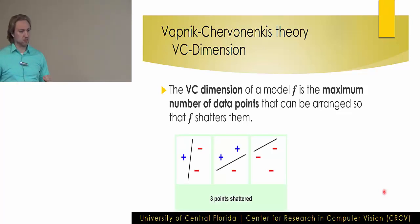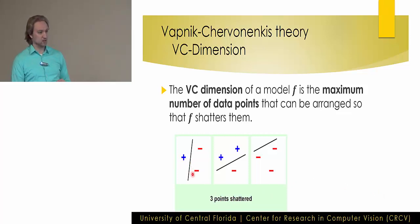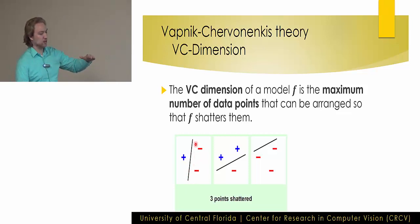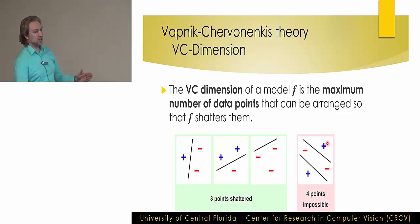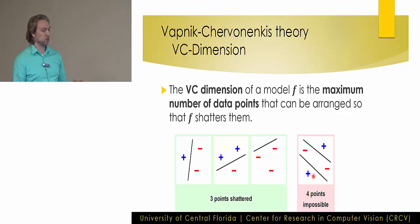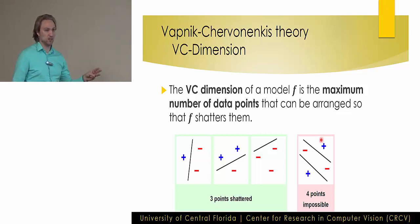Here's an example. We have a simple linear classifier trying to draw a line to separate points into two groups: blue pluses and red minuses. Given some set of three input points, there is a learned parameter set theta such that we can draw a line and perfectly separate them. But once we move to four points, there exist possible input configurations that we cannot separate given any possible setting of the parameters theta — because there are three groups: blue, red, blue. So the VC dimension of this linear classifier is three.